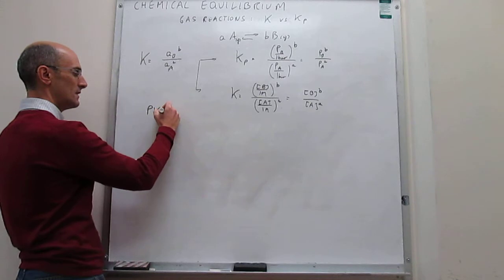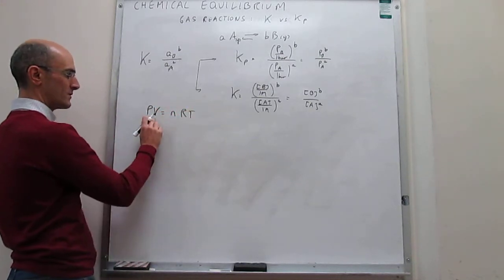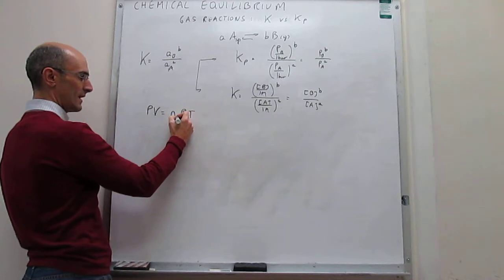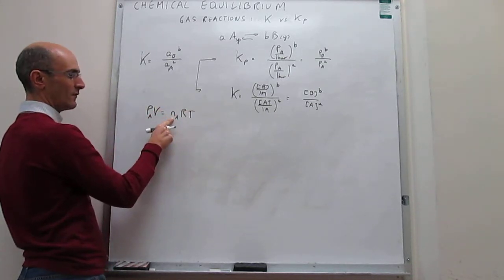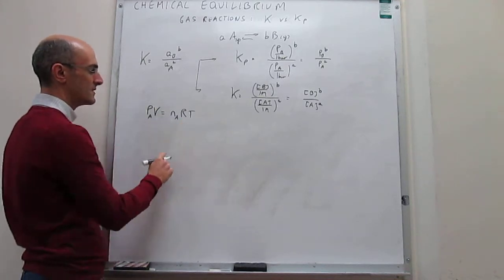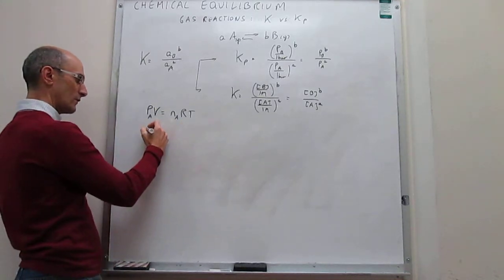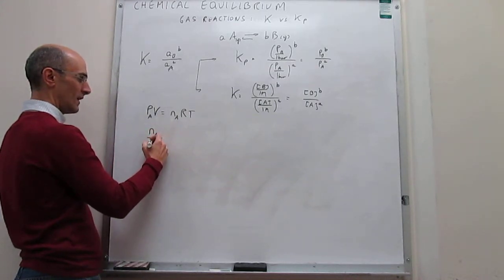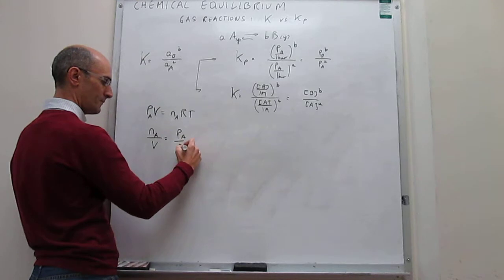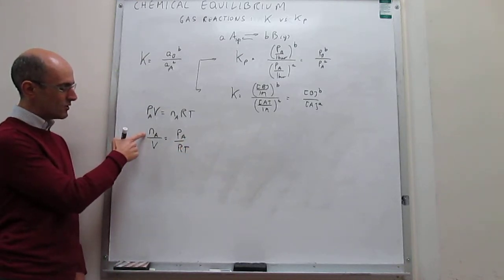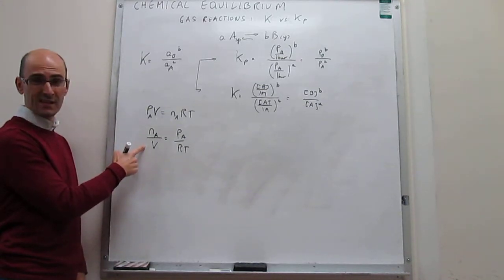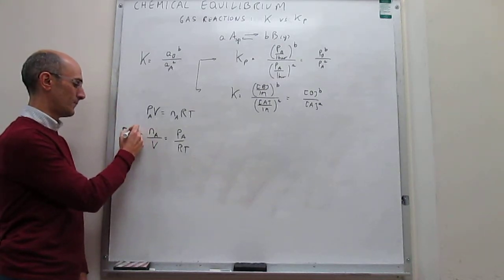The ideal gas equation of state is PV = nRT, where P is the pressure, V is the volume, n is the number of moles, R is the gas constant, and T is the temperature. For a particular gas A, that will be the number of moles of A and the partial pressure of A. We can rearrange to get n_A / V = P_A / RT. Notice that n_A over volume has units of moles per liter, which is essentially the molar concentration of A.